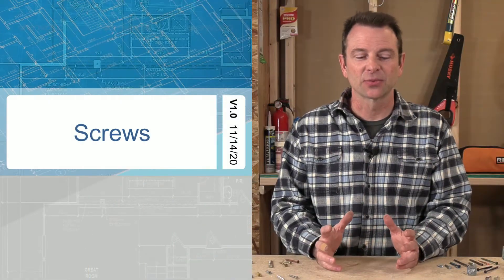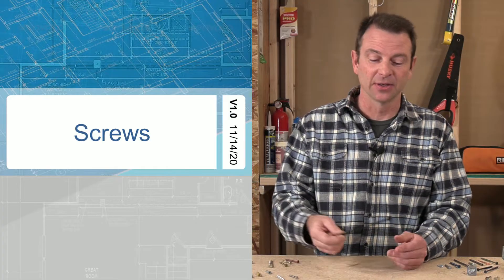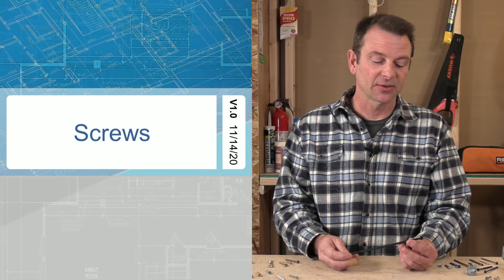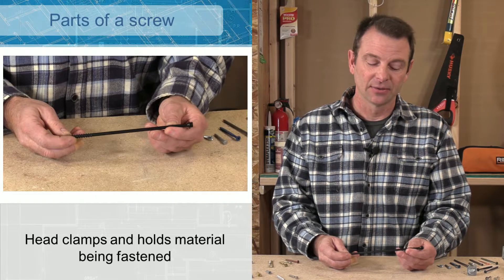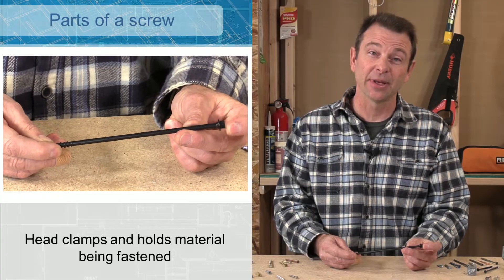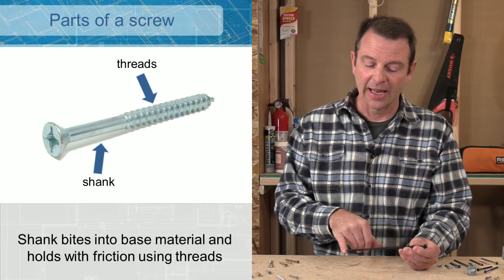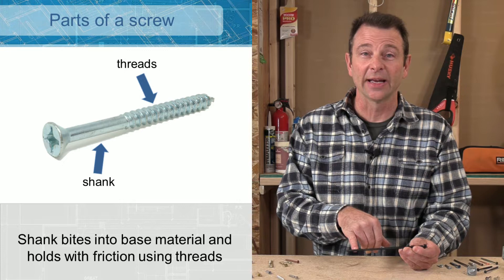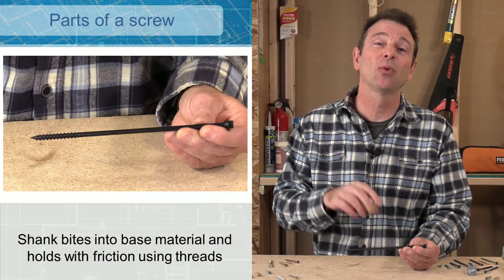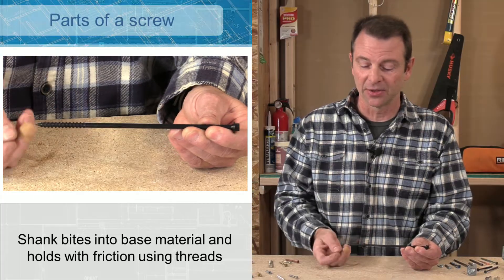Let's talk about screws, specifically their parts. I have a very large screw here. This is a specialty screw and like a nail, screws have a head on them and the head is for clamping the top material that we're trying to fasten. They'll have a shank on them and on the shank will be threads. These threads typically will wind clockwise and will pull that fastener into the material.